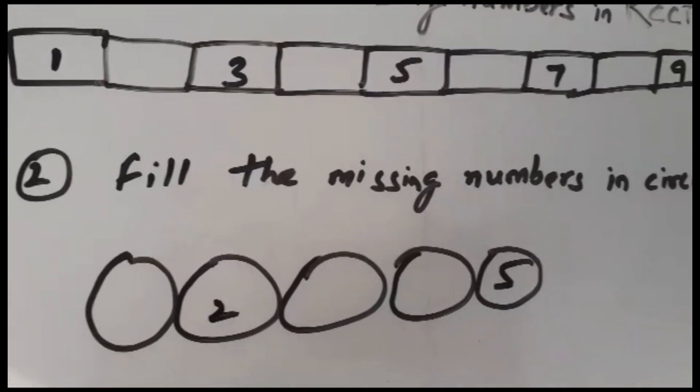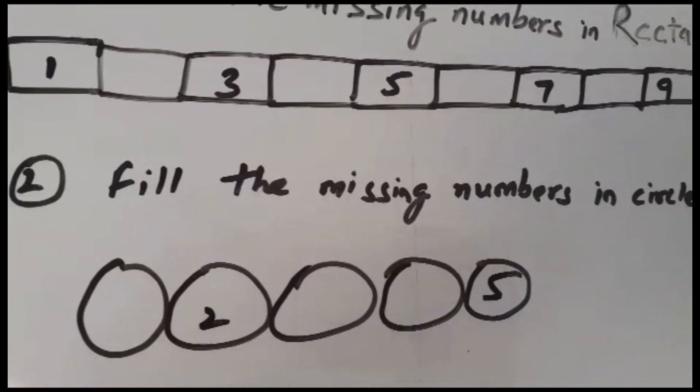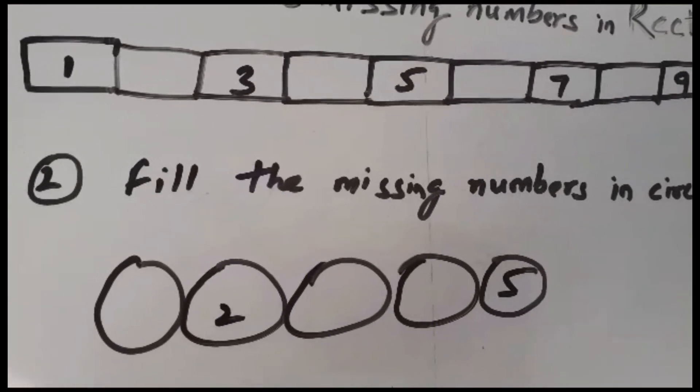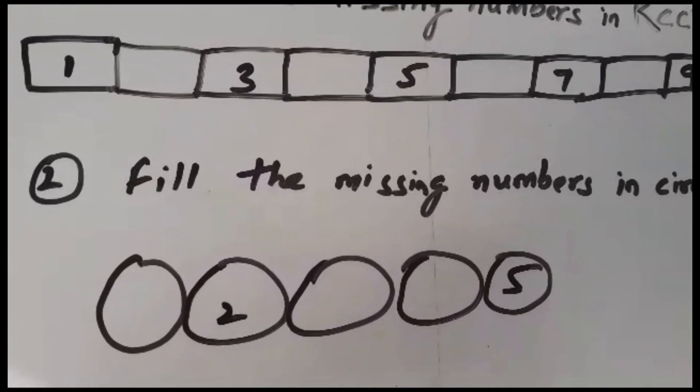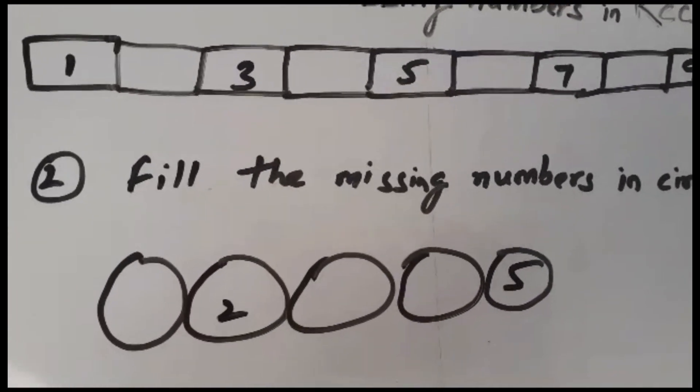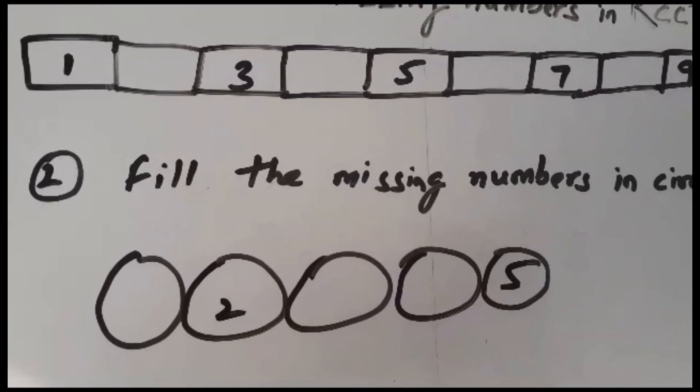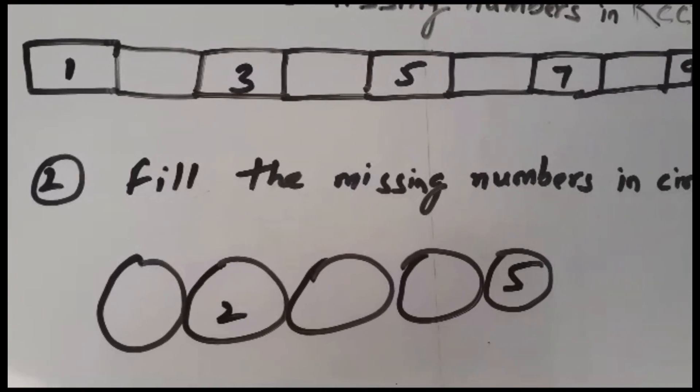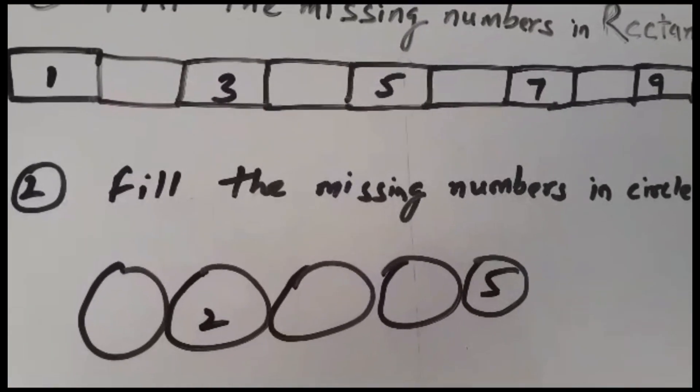And there is fill the missing numbers in the circle. So I have made a circle and there are missing numbers. You have to share the solution in the comment section. I will be telling you after your comments what is correct and what is not correct.